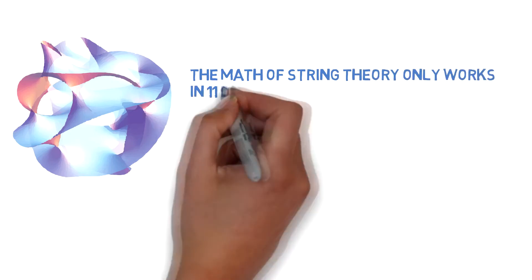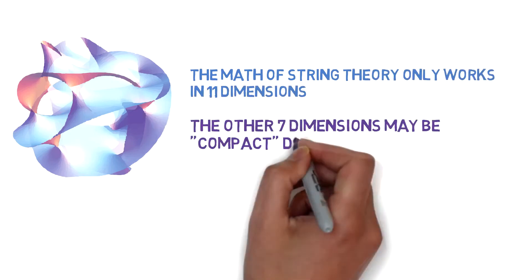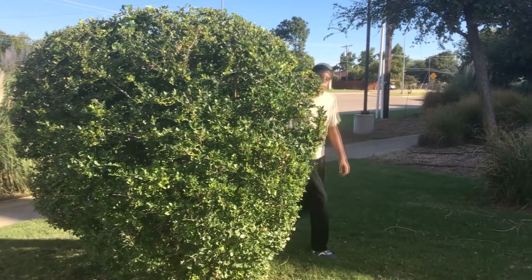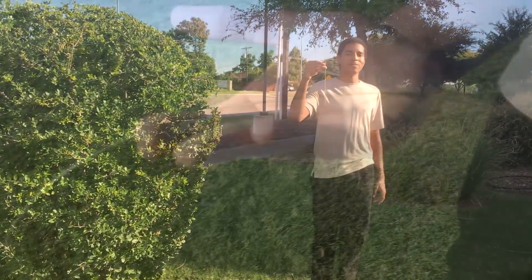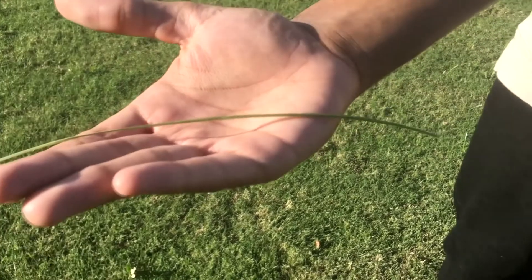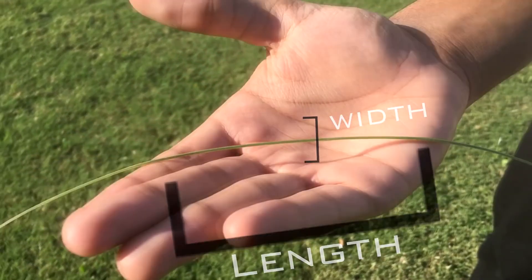One explanation is that these extra dimensions are so small, we can't see them or detect them. It is believed that these dimensions are curled up. Take this part of a bush, for example. From really far away, it looks like a one-dimensional line. But close up, you can see it is two-dimensional. The same reasoning can be applied for compact dimensions.